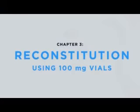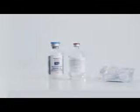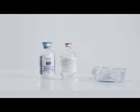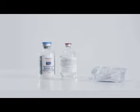Reconstitution using 100 milligram vials. Now that we've set out the material and calculated the dose, let's go over the step-by-step reconstitution process for Activase. It's important to reconstitute Activase immediately before administration using only sterile water for injection USP without preservatives and the transfer device, which are provided in the Activase package.